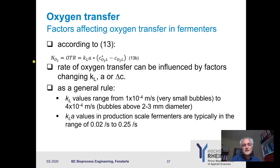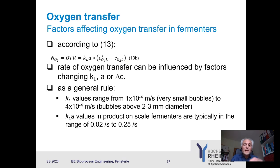We have already seen in equation 13 that the oxygen transfer rate is KLA times the saturation concentration of oxygen minus the oxygen concentration in the liquid. If you want to influence this oxygen transfer rate, you can either increase KL, increase A, or increase delta C.